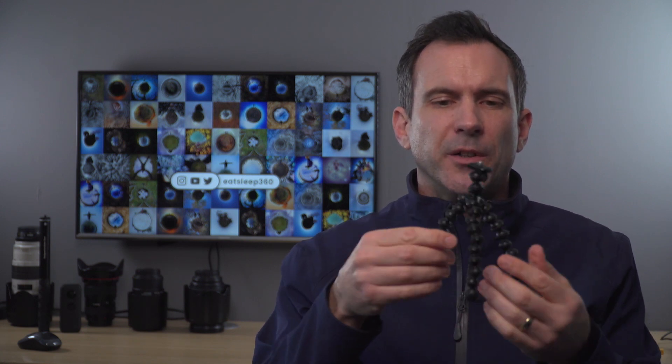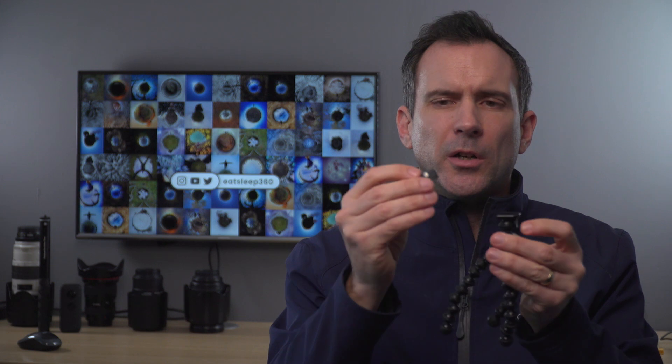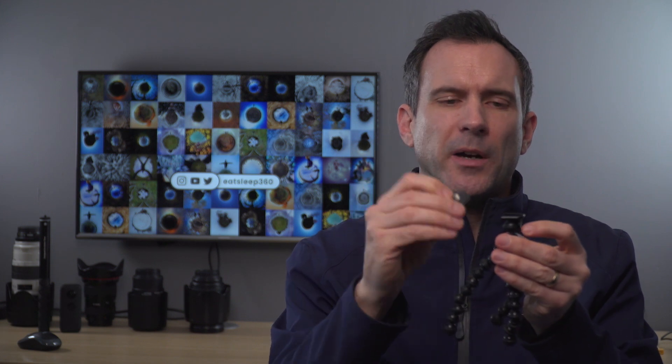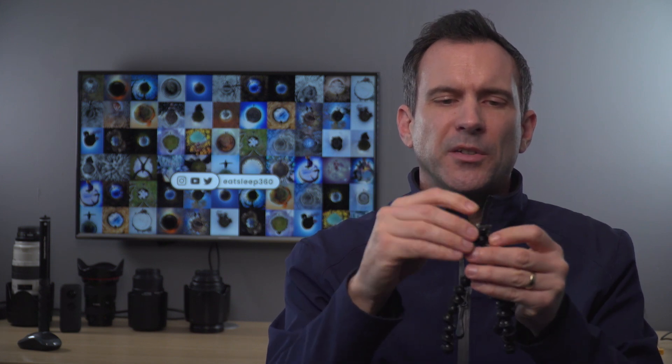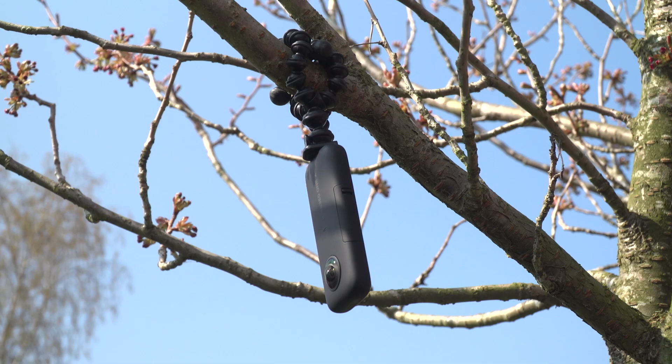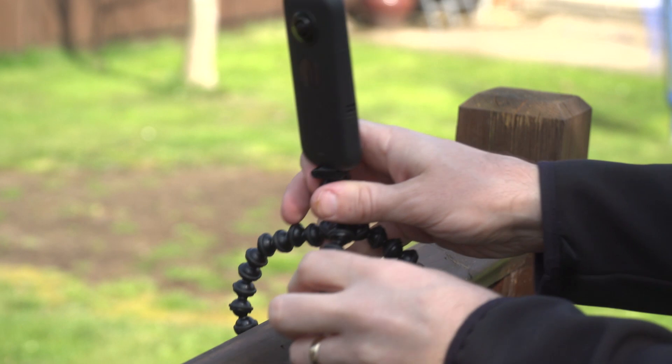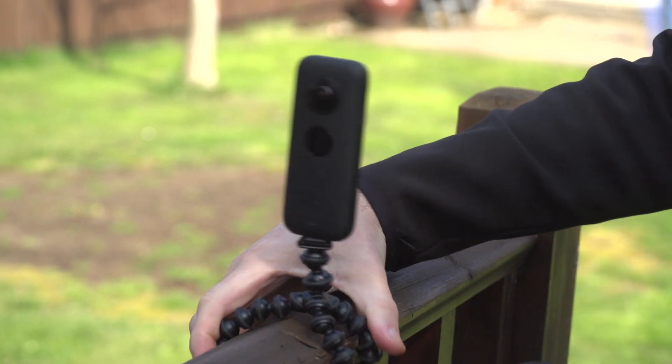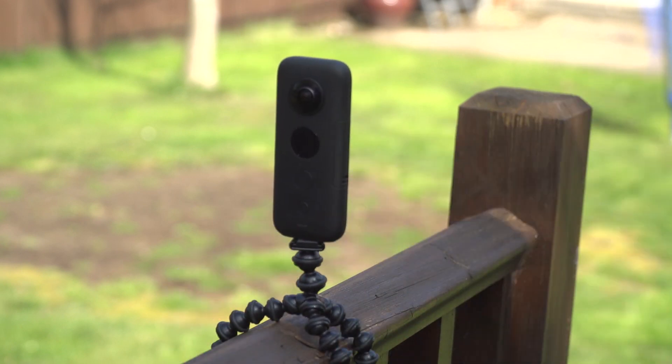The final tripod I have is the Joby Gorillapod. This really is a secondary tripod because it's too much of a pain to adjust. Every single leg is adjustable, and you can adjust the head, and it has a quick release plate as well, so it does have some good features. But the main reason I use this is so I can wrap the legs around trees, around railings, and put the camera in positions that you just can't get into with the other tripods.